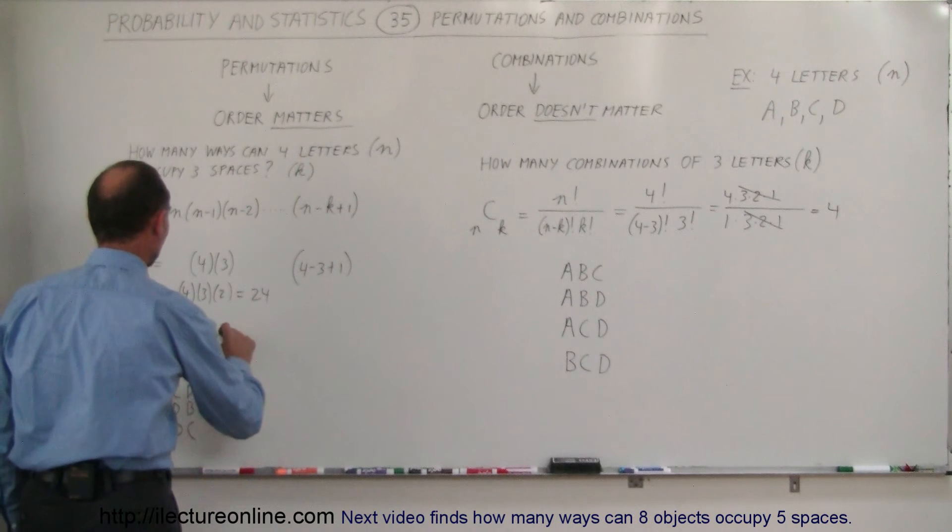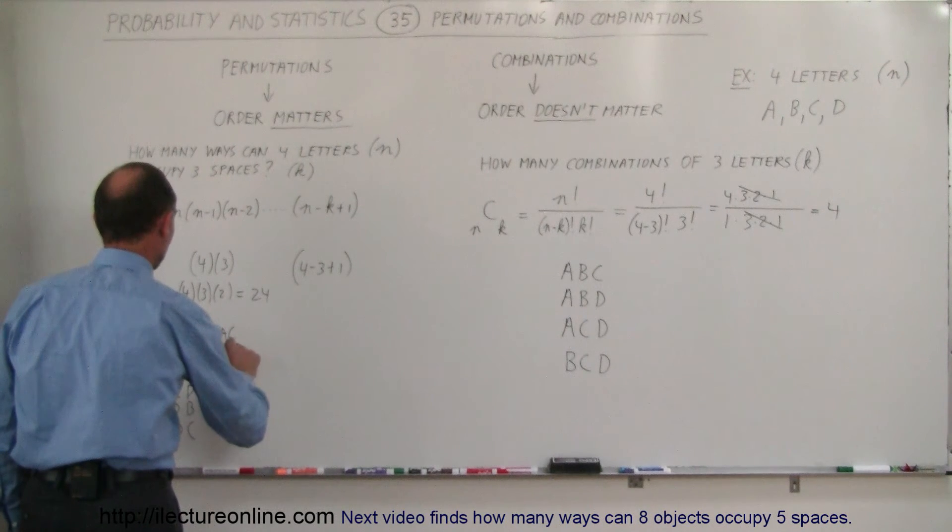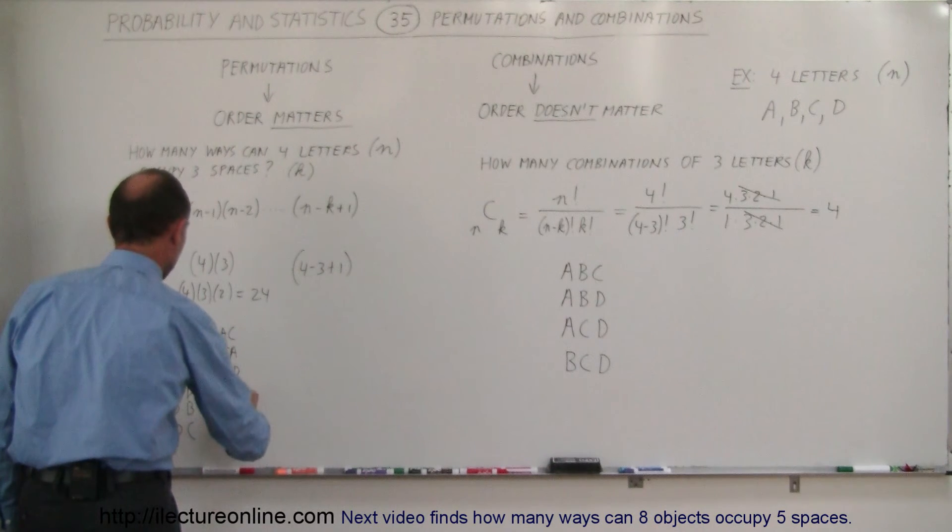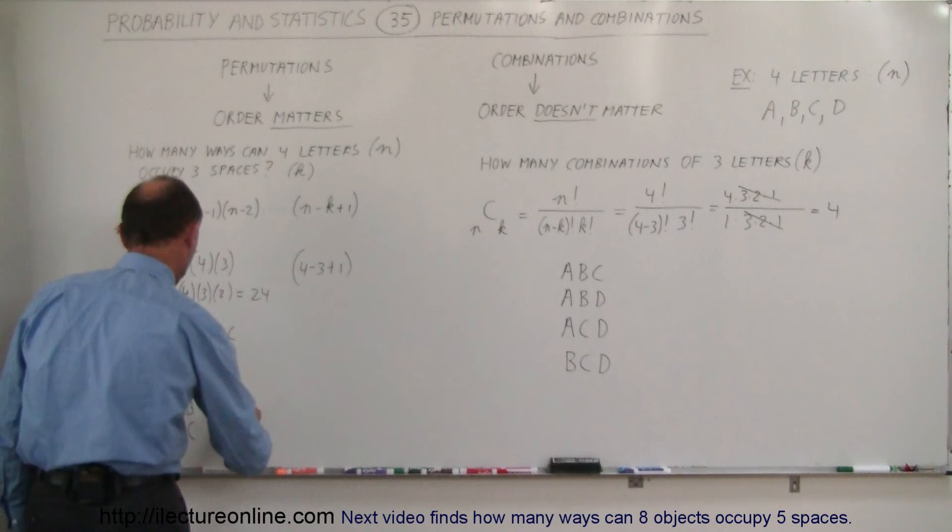So, we can have B, A, C, B, C, A, B, A, D, B, D, A. B, let's see here.